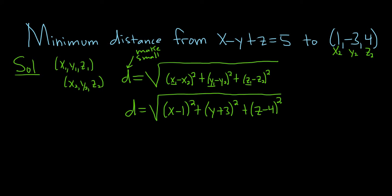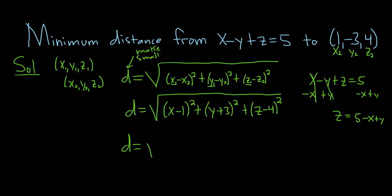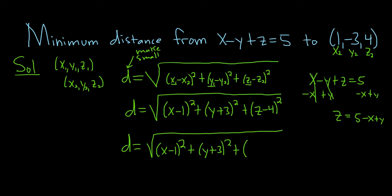The goal is to make this as small as possible. This is a function of three variables, so it might be a good idea to write it as a function of two variables. We can take x minus y plus z equals 5 and solve for z: z equals 5 minus x plus y. So d equals the square root of x minus 1 squared, plus y plus 3 squared, plus 5 minus x plus y minus 4 squared.